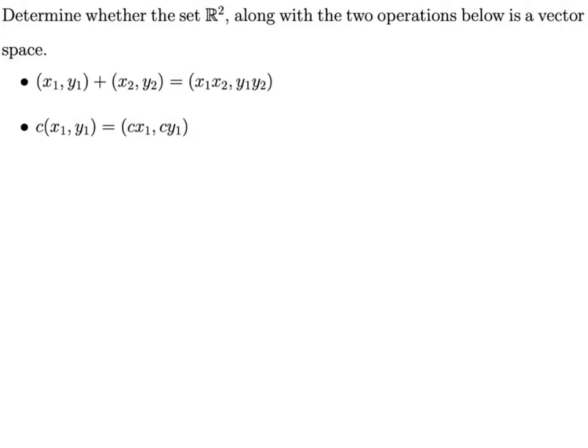But look at how we're defining our vector addition. When we add two ordered pairs together, instead of adding the corresponding components, we're going to multiply them.